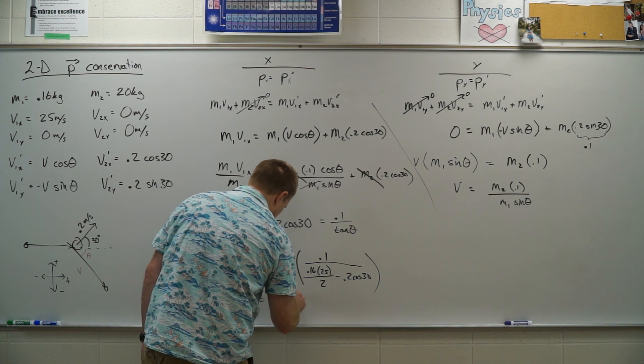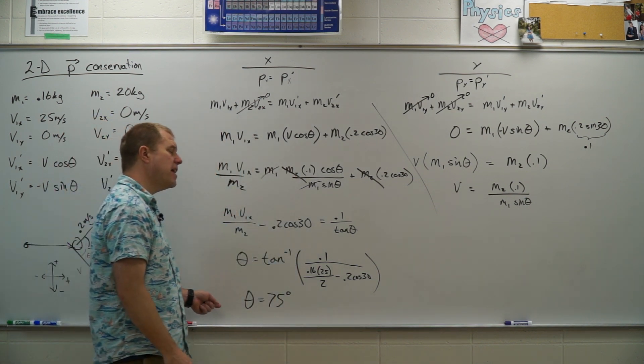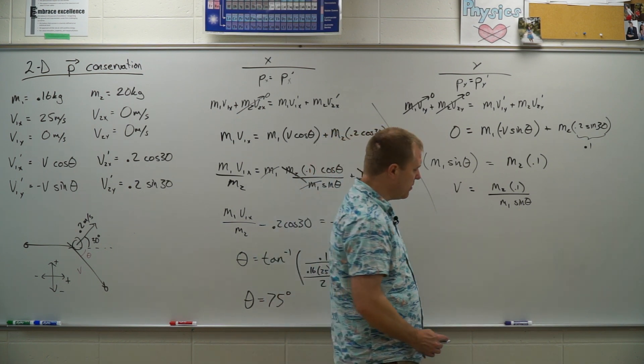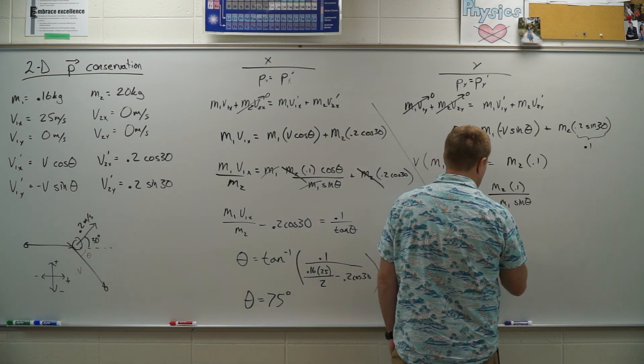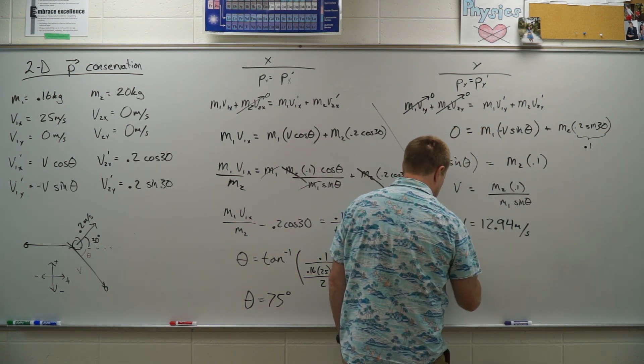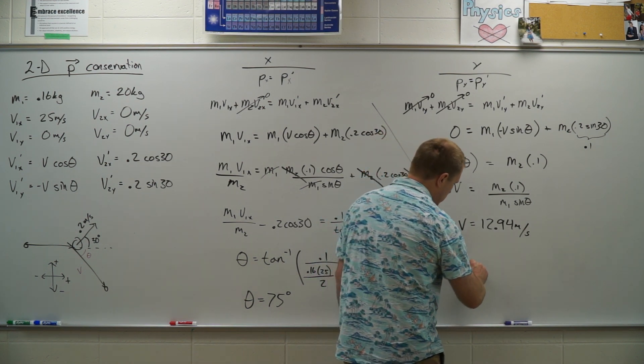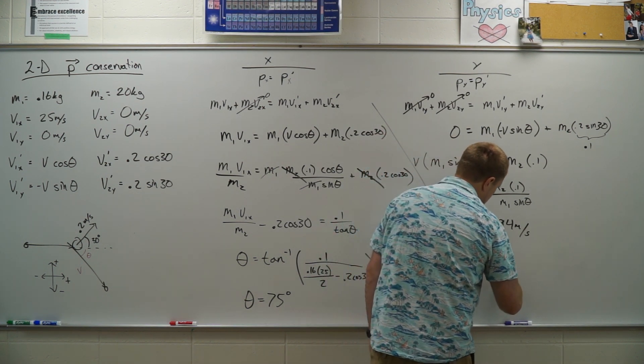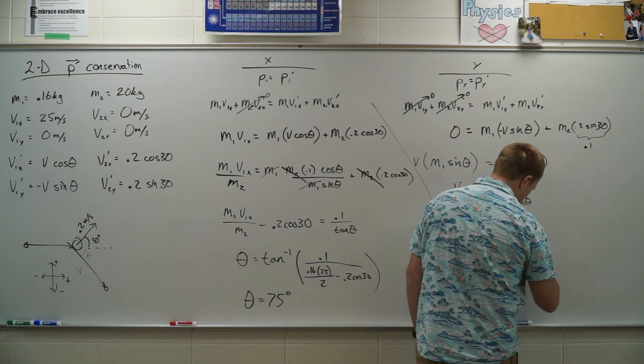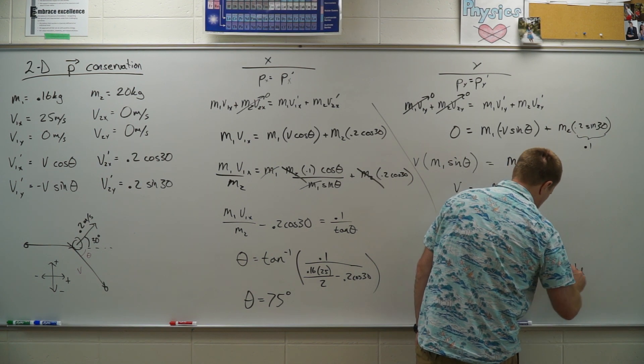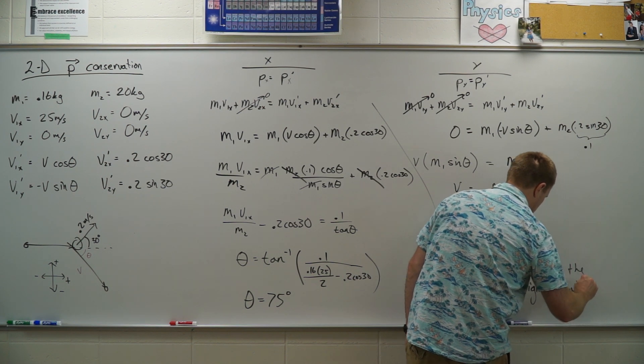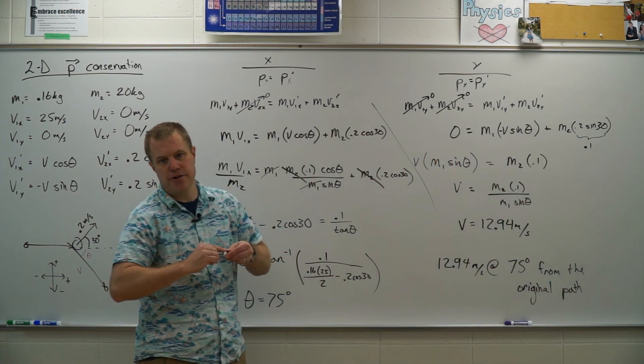That's cool. 75 degrees. Now that I know theta, I can plug my 75 degrees in here and get my V. The V comes out to be 12.94 meters per second. So then I just need to put that all in one big group. So 12.94 meters per second at, and then I'll say 75 degrees from the original path, and of course, opposite the direction of the curling stone.